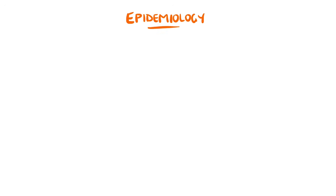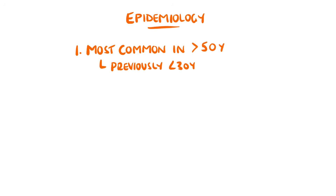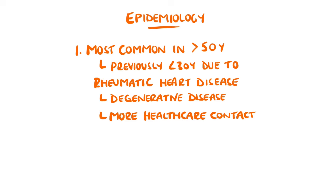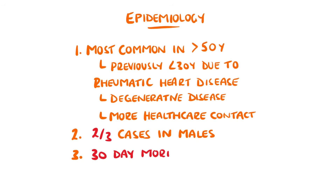Infective endocarditis is most commonly seen in patients over the age of 50, which is a relatively recent change because in the early 1900s it was most common in patients under the age of 30. This is because back then rheumatic heart disease was the main risk factor, which is more common in younger patients, while now degenerative disease, which is seen in older patients, is more prominent. Also, the general population is older and therefore more prone to exposure to healthcare. Around 2 out of 3 patients are male, and although the incidence is less than 10 in 100,000, there is an associated 30-day mortality of 30%.